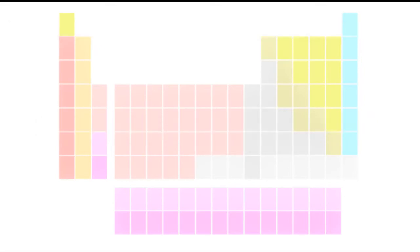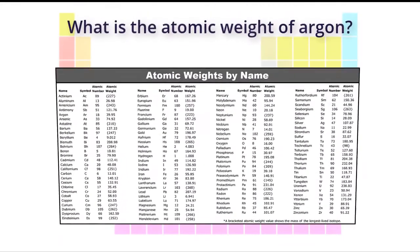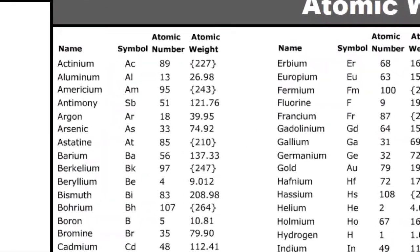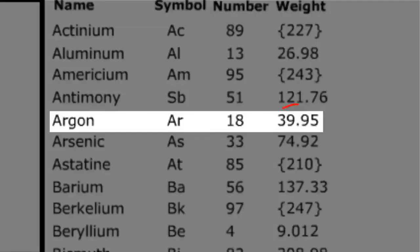Here's another example: what is the atomic weight of argon? Pause the video here and play it once you think you know the answer. The correct answer is an atomic weight of 39.95 grams per mole.